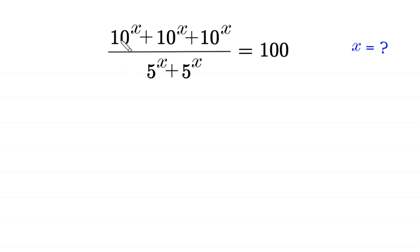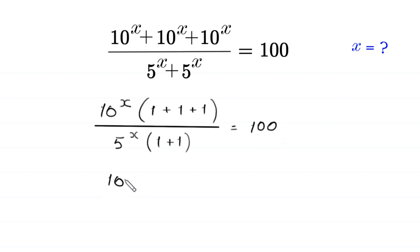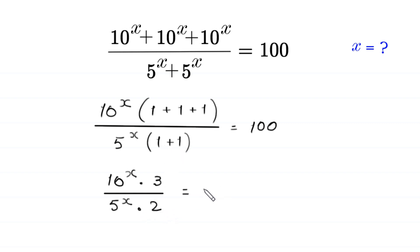From the numerator, we can factor out 10 to the power x as a common factor, leaving 1 plus 1 plus 1 in the bracket. From the denominator, we can factor out 5 to the power x as a common factor, leaving 1 plus 1 in the bracket, so that equals 100.